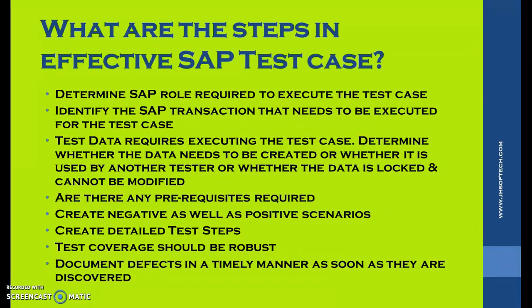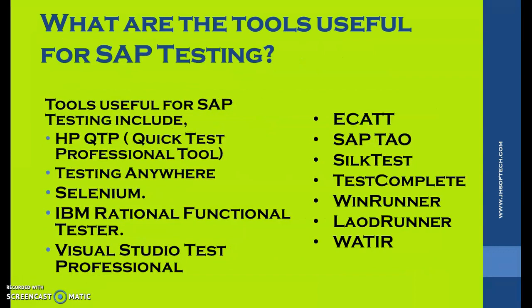The steps in an effective SAP test case are: determine the SAP role required to execute the test case; identify the SAP transactions that need to be executed; determine the test data — whether it needs to be created or already exists; know if there are any prerequisites; create both negative and positive scenarios including black box and white box testing; create detailed test steps; ensure test coverage is robust; and document defects in a timely manner as soon as they are discovered.